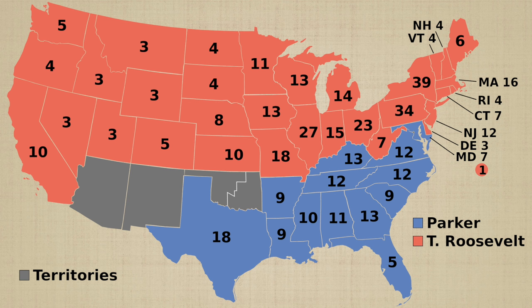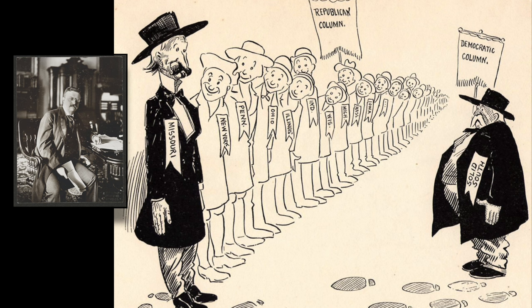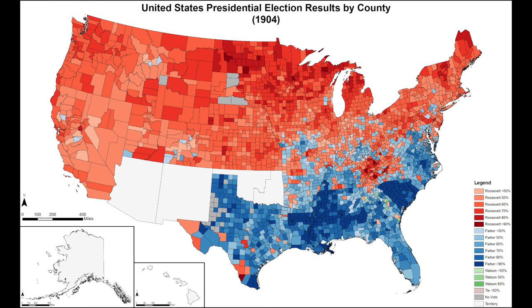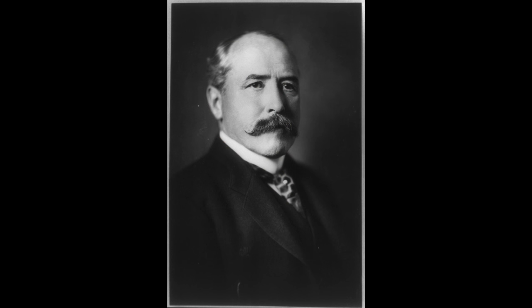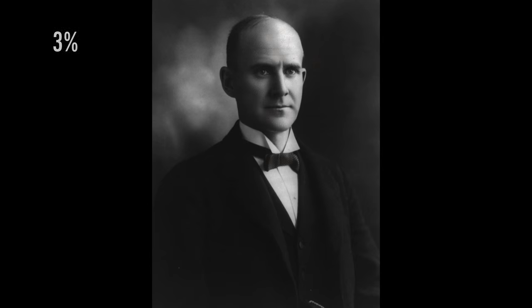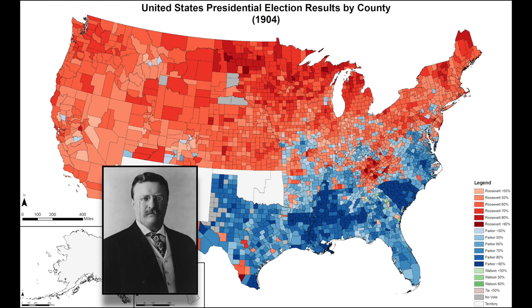Roosevelt absolutely dominated everywhere except the South. Roosevelt became the first Republican to win the state of Missouri since 1868. The popular vote was just as lopsided, with Roosevelt getting 56.4% and Parker getting just 37.6%. Eugene Debs came in 3rd, not winning any electoral votes, but getting a respectable 3% of the popular vote. Silas Swallow came in 4th, getting 1.9% of the popular vote. Charles Fairbanks became the 26th vice president in American history. Teddy Roosevelt became the first president to win an election after becoming president not by election in American history.